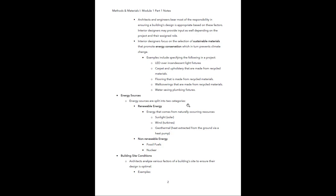Moving on, we're going to dive into types of energy. Energy sources are split into two categories — renewable and non-renewable. Renewable energy comes from naturally occurring resources such as solar energy from solar panels, wind energy from turbines, or geothermal energy, which is heat extracted from the earth via a heat pump. Many newer buildings use geothermal energy to heat the building in wintertime, using natural energy from the earth instead of mechanical systems that rely on non-renewable energy.